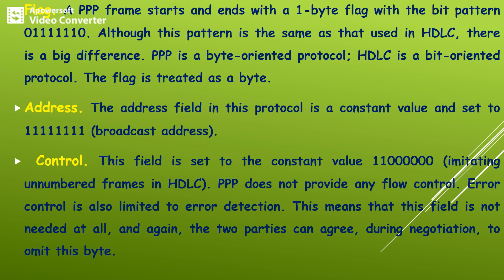The first field is the flag field. In the case of PPP, the flag field is one byte with the bit pattern zero followed by six ones and zero. The same bit pattern is used in the case of HDLC protocol, but HDLC is a bit-oriented protocol whereas PPP is a byte-oriented protocol.